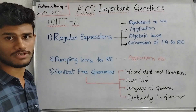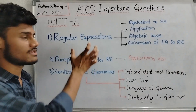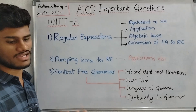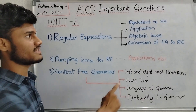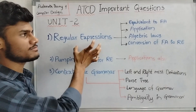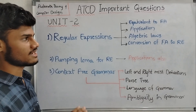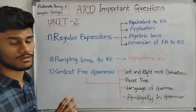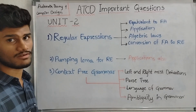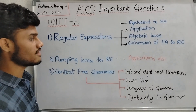Coming to our second unit, which is completely on Regular Expressions. We have to cover the basics of regular expressions, regular expression diagrams, and describe each and every property. There are algebraic laws such as commutative, associative, and distributive. We also cover how regular expressions are equivalent to finite automata, applications of regular expressions, and conversion of finite automata to regular expressions.